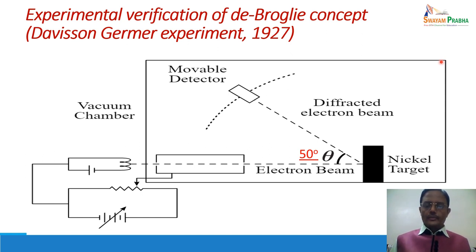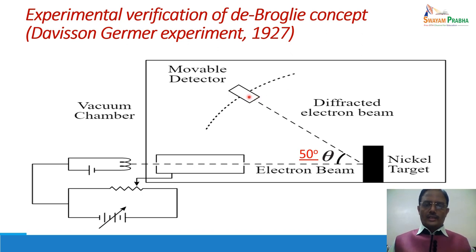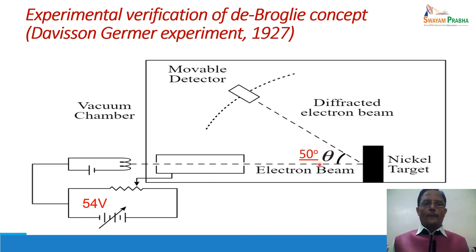That was the first observation. They then kept 50 degrees as the constant angle and fixed the position of the movable detector. In the second part of the experiment, they varied the applied potential. With increasing potential, the intensity initially increased, reached a maximum, and then decreased. The maximum intensity was obtained at an applied potential of 54 volts. These are the two important values obtained from the Davison-Germer experiment: maximum intensity of the wave at 50 degrees and maximum intensity of the particle at 54 volts applied potential.